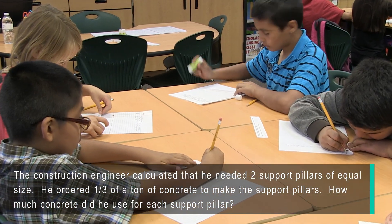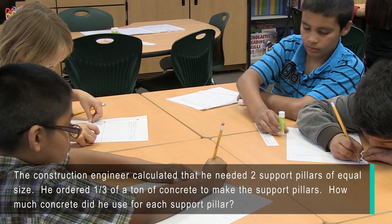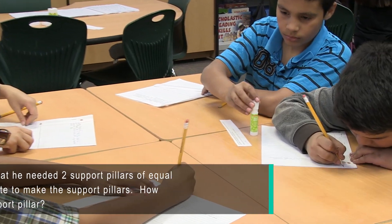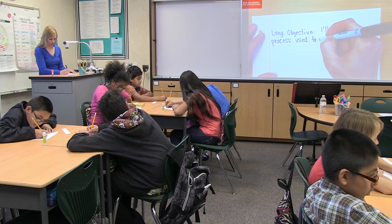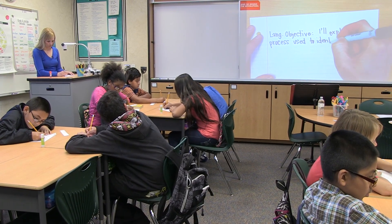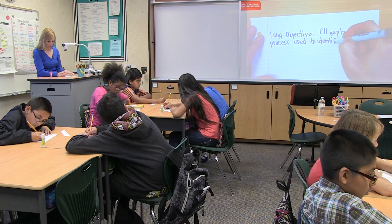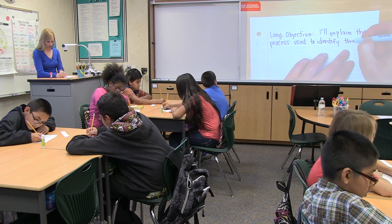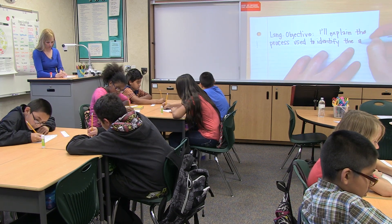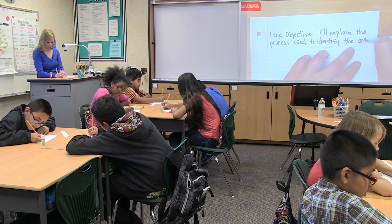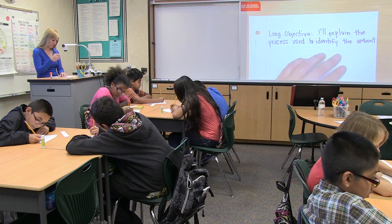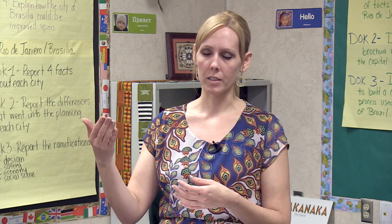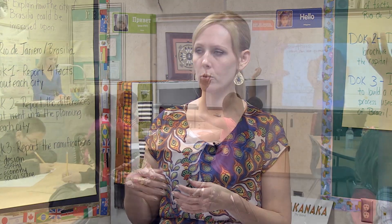They're given the prompt, they glue it onto the front, they discuss and annotate the prompt. They have to determine their own language objective for the lesson. They don't know what the math objective is yet because they're not sure which skill they're going to use — that's part of the process they're trying to determine. So they have a language goal of how they can discuss it and what they'll use.